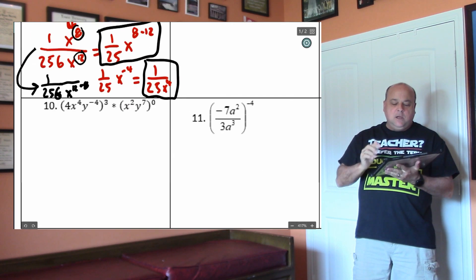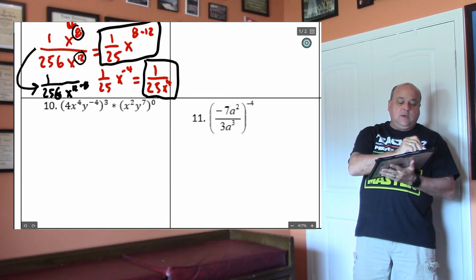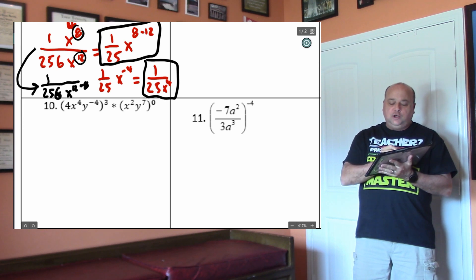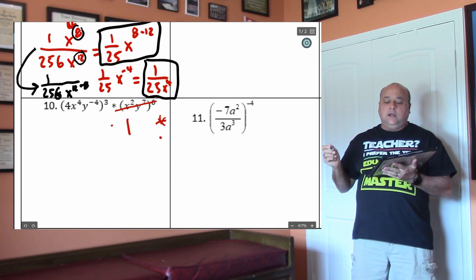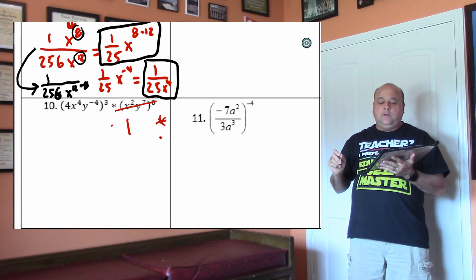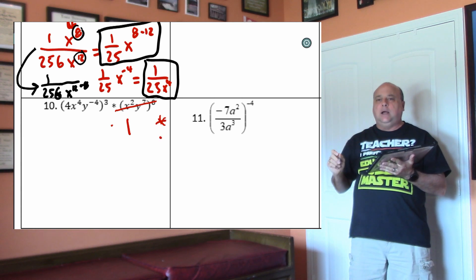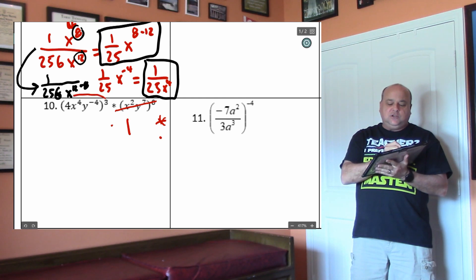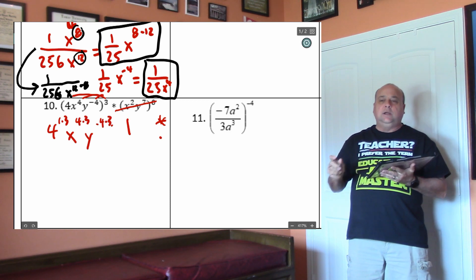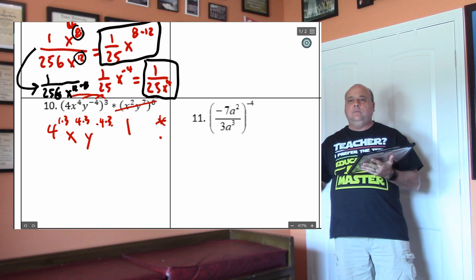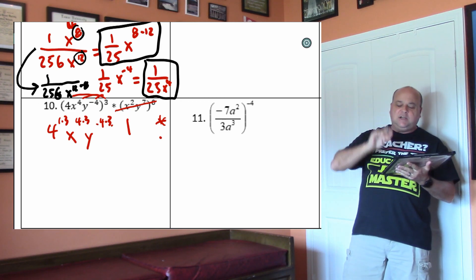Look at number 10 — do you see that you have a zero power? What you should do is scratch that out and all of this turns into 1. Also, these star buttons are multiplication. I'm just going to start you off: you're going to do 4 to the 1 times 3, x to the 4 times 3, y to the negative 4 times 3, and then times the 1. I'm not going to finish that for you.